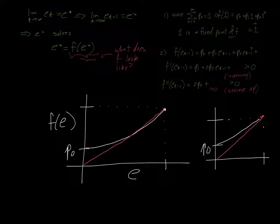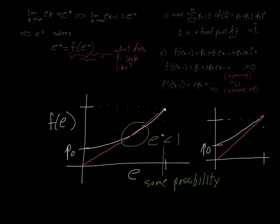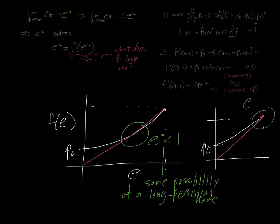And so notice, in the leftmost case, this is E star, which is less than 1, which means that your surname is not sure to go extinct. So some possibility of a long, persistent surname. And in this case, E star is exactly 1, in which case your surname goes extinct.